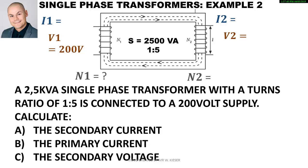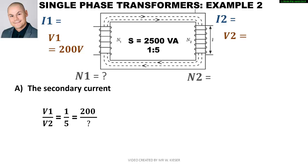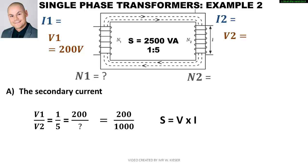Let's look at our second example. We have a 2.5 kVA single phase transformer with a turns ratio of 1 to 5, connected to a 200 volt supply. This is a step-up transformer; the rating is 2,500 volt-amps. We are not given V2, but we have the turns ratio. Since 200 volts corresponds to 1 on the primary, V2 equals 200 multiplied by 5, giving us 1,000 volts.